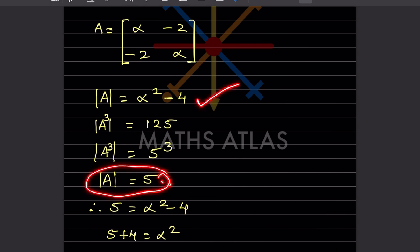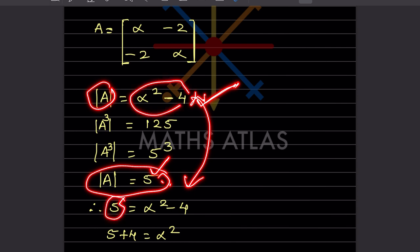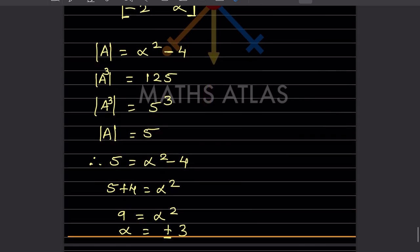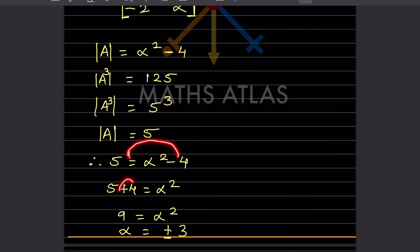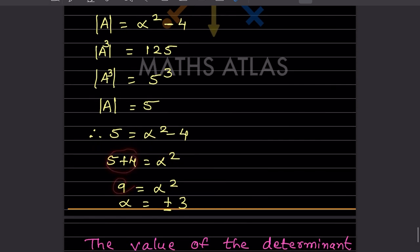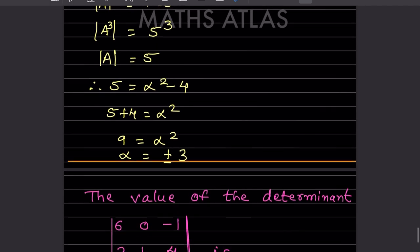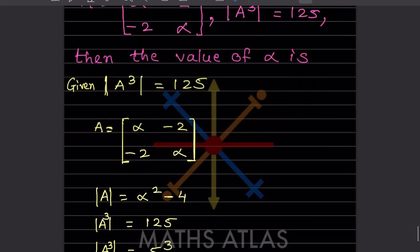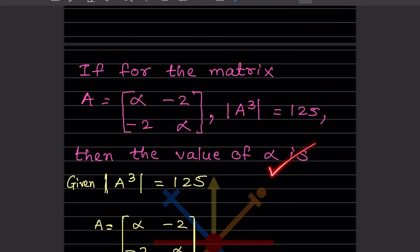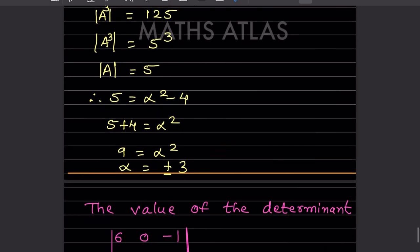Setting det(A) equal to 5: alpha squared minus 4 equals 5. Taking 4 to the other side gives alpha squared equals 9. Taking the square root of both sides gives alpha equals plus or minus 3. So the value of alpha is plus or minus 3.